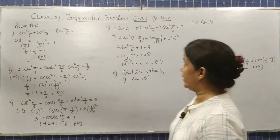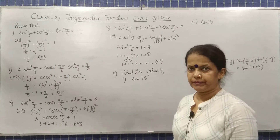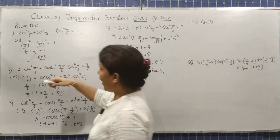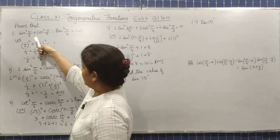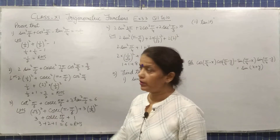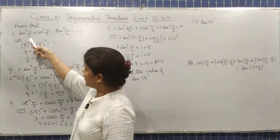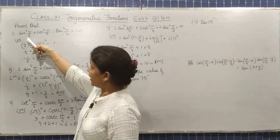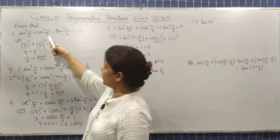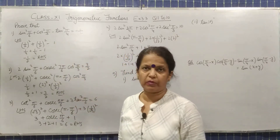Welcome back with exercise 3.3. Question 1: you have to prove sin²(π/6) + cos²(π/3) + tan²(π/4).